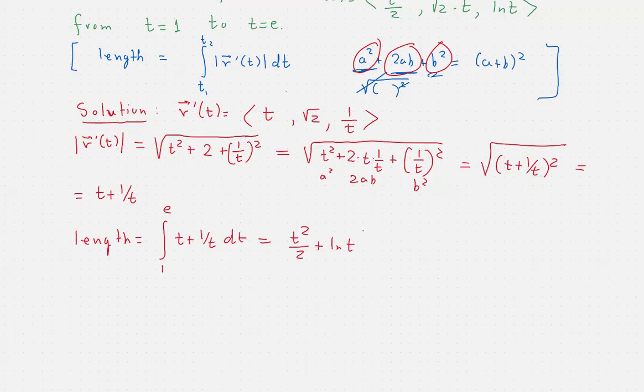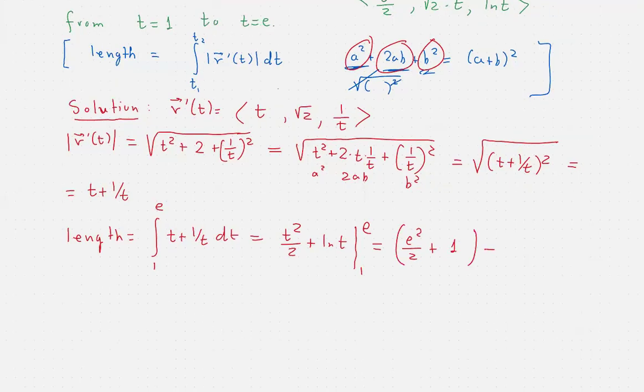And we will have e squared over 2 plus ln of e, ln of e is 1, minus 1 squared over 2 plus ln of 1, ln of 1 is 0.